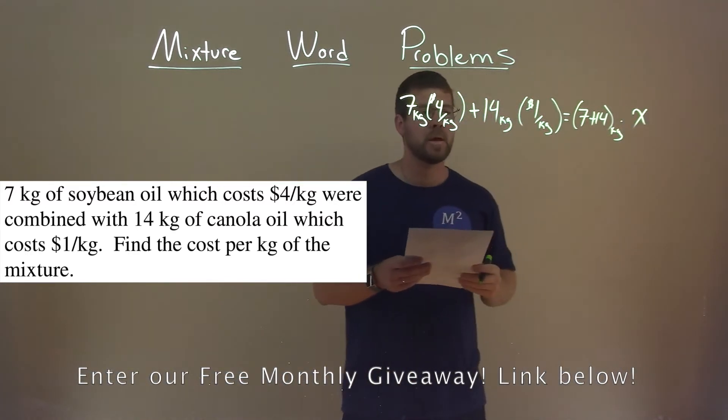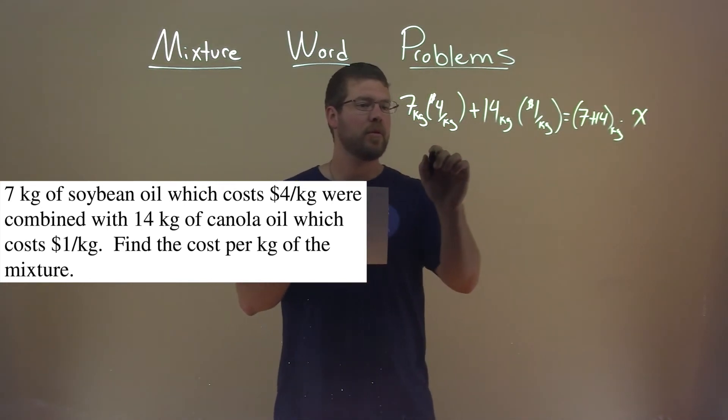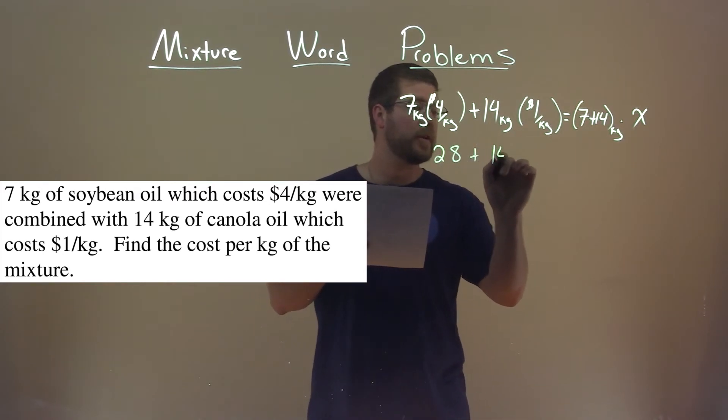Okay, so now we just have to solve for x. 7 times 4 is 28, plus 14 times 1 is 14.